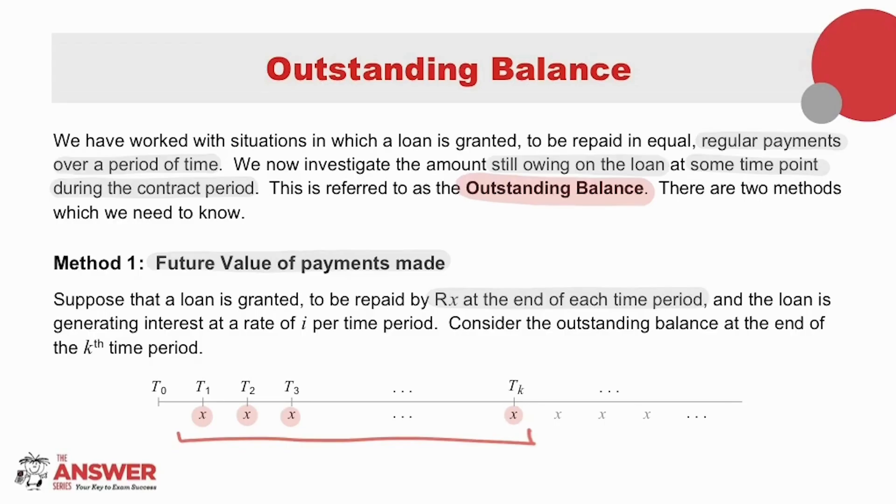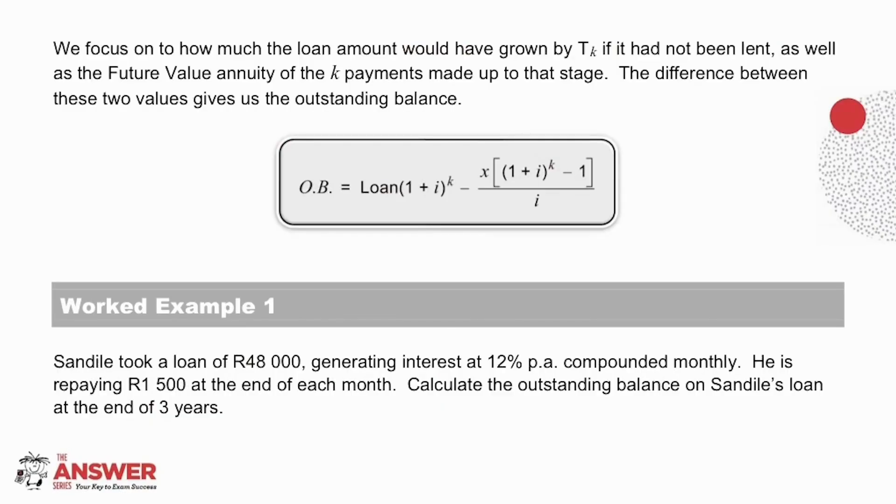So let's consider, if the loan that was taken out at T₀ had not been removed from the bank, how much it would be worth at time Tₖ if it instead had stayed in the bank and earned interest over this period. And now let's see this value in comparison to the future value at Tₖ of all the payments made.